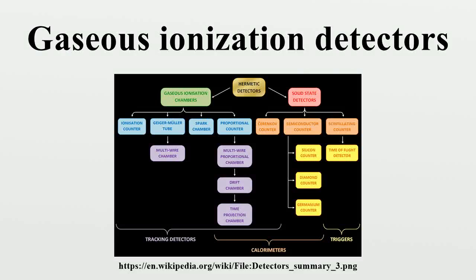Gaseous ionization detectors are radiation detection instruments used in particle physics to detect the presence of ionizing particles, and in radiation protection applications to measure ionizing radiation. They use the ionizing effect of radiation upon a gas-filled sensor. If a particle has enough energy to ionize a gas atom or molecule, the resulting electrons and ions cause a current flow which can be measured. Gaseous ionization detectors form an important group of instruments used for radiation detection and measurement. This article gives a quick overview of the principal types, and more detailed information can be found in the articles on each instrument.